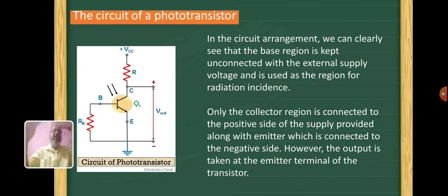The circuit diagram of a phototransistor shows the base where the incident light is incident, and the current flows with the output taken in the collector-emitter region.